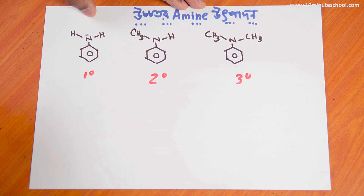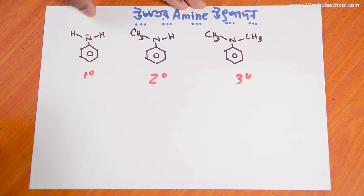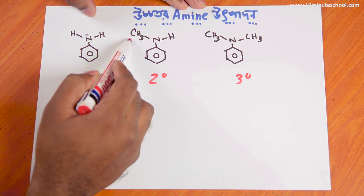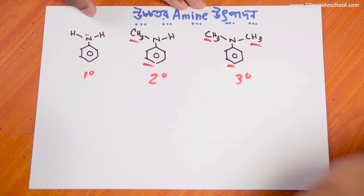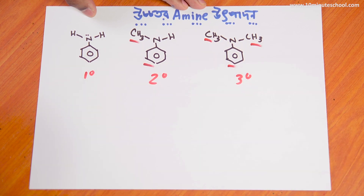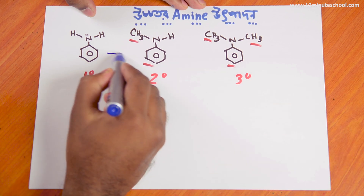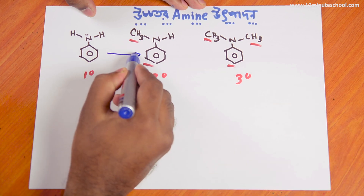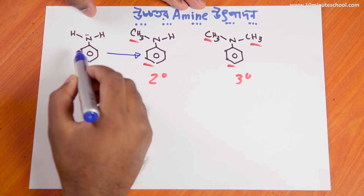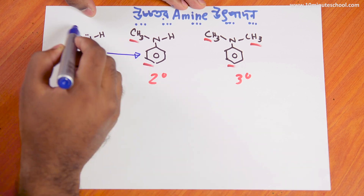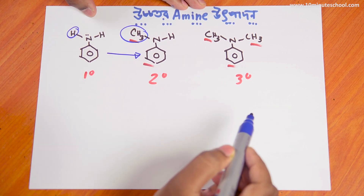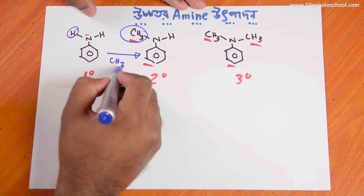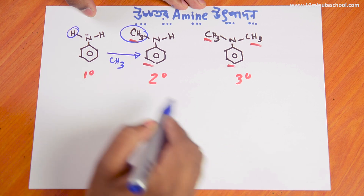The group is the same way. 1 degree amine is 1 degree, 2 degree amine is 2 degree, 2 degree amine is 3 degree. What is the difference between 1 and 2 degree amine? It is hydrogen and CH3. You can find CH3.